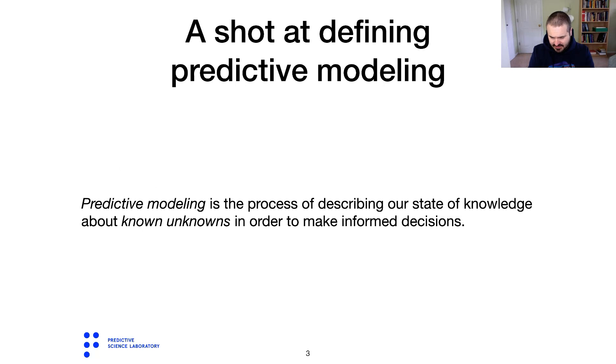Predictive modeling focuses only on known knowns and known unknowns. It is in particular the process of describing our state of knowledge about known unknowns so that we can make informed decisions. It's basically a process that allows you to enumerate all the things that you know that you don't know and quantify mathematically your uncertainty about these things, estimate the effects of this uncertainty on other derived quantities of interest, and then use the results of this analysis to make informed decisions.